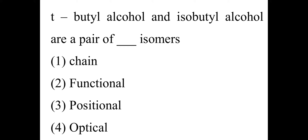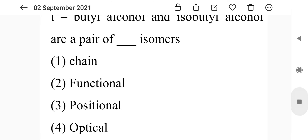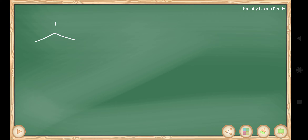Tertiary butyl alcohol and isobutyl alcohol are a pair of position isomers. This is a simple question that students often get confused about. Tertiary butyl alcohol means it is a tertiary alcohol.